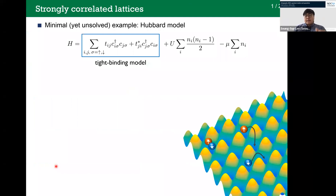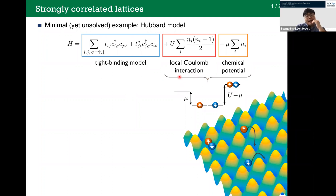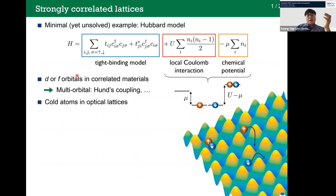All these emergent quantum phenomena I mentioned can arise from strongly correlated lattice systems. Its minimal example is the Hubbard model, which is a tight-binding model, and on top of this we have the on-site Coulomb interaction. We are typically interested in the regime where the singly-occupied states at each lattice site have lower energies than the doubly-occupied state and the empty state. This model was originally designed to describe the d or f orbitals in correlated electronic materials. When it becomes multi-orbital, there are extra terms added to the Hamiltonian, such as Hund coupling.